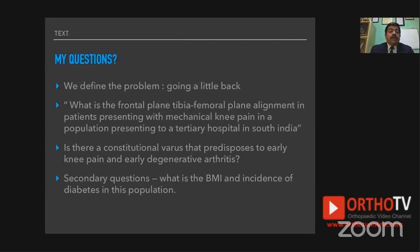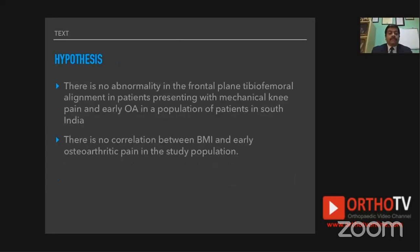A literature search helps define the problem. The primary question becomes: what is the frontal plane tibio-femoral alignment in patients presenting with mechanical knee pain at a tertiary hospital? Is there a constitutional varus that predisposes to early knee pain and degenerative arthritis? Secondary questions might include BMI and incidence of diabetes in this population. You develop a hypothesis — that there is no abnormality in frontal plane tibio-femoral alignment in patients presenting with early osteoarthritic knee pain — and then try to prove or disprove it.